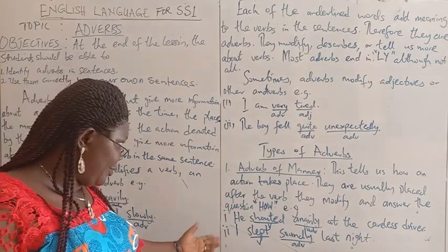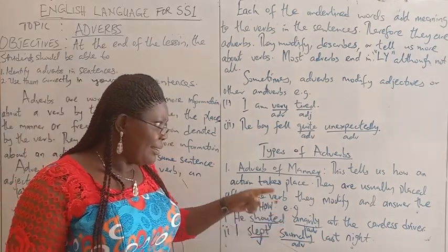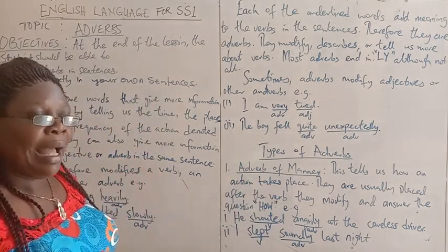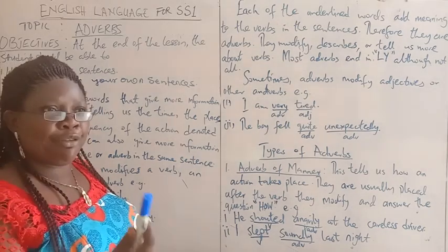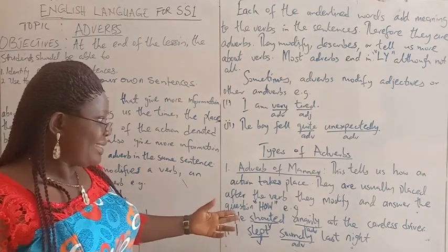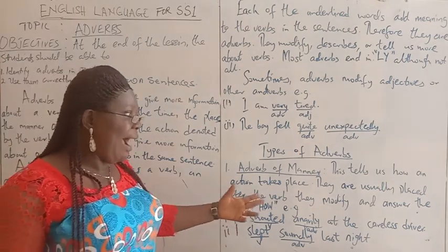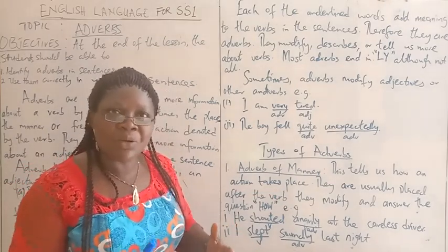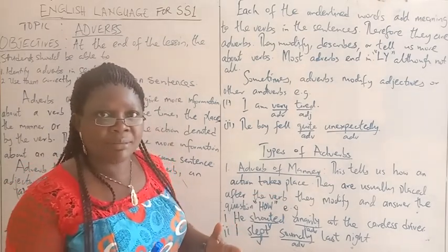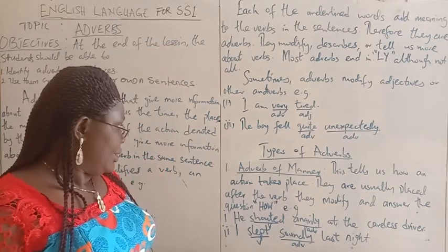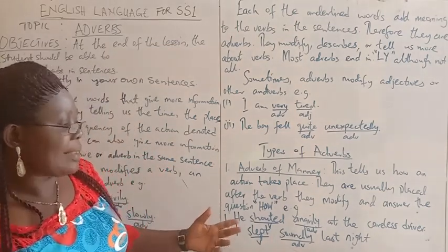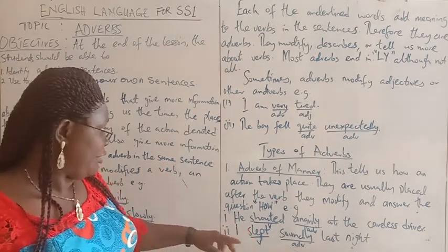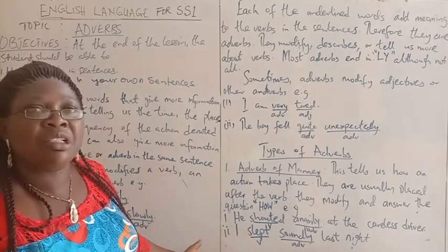For example: 'He shouted angrily at the careless driver.' Somebody can shout and not in an angry manner — you can raise your voice without being angry. But here, 'angrily' tells us the manner in which he shouted. In the second sentence, 'I slept soundly last night' — 'soundly', as an adverb, is modifying the verb 'slept', telling us the manner in which he slept.